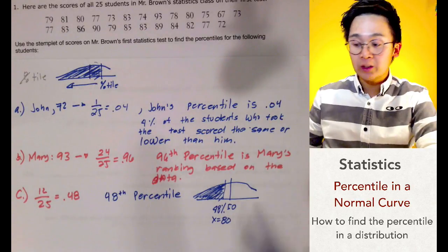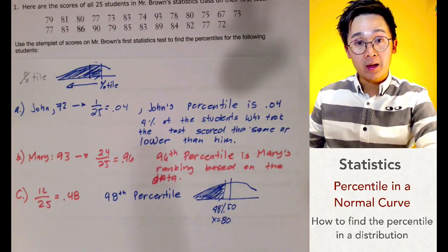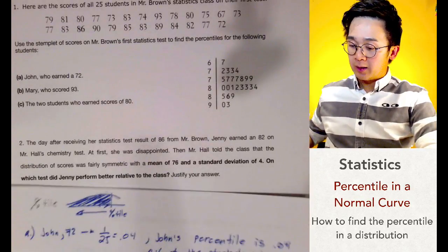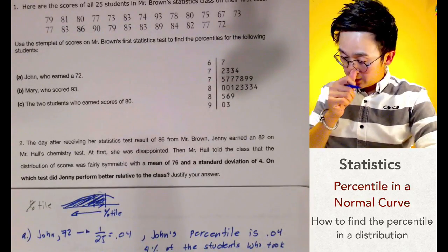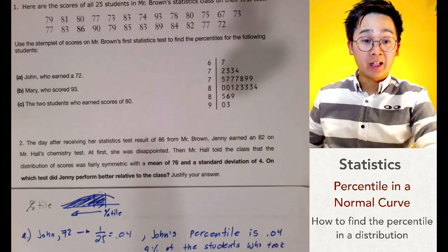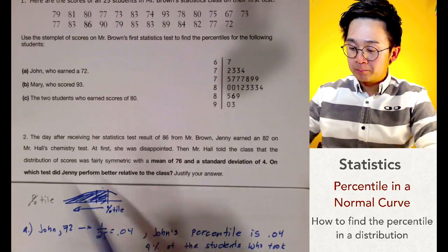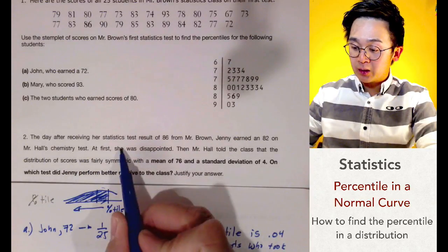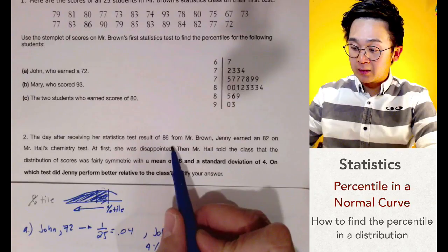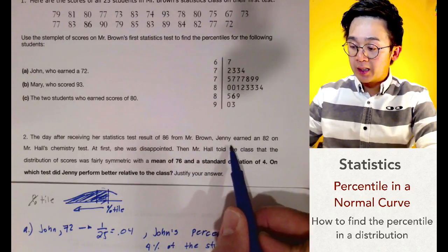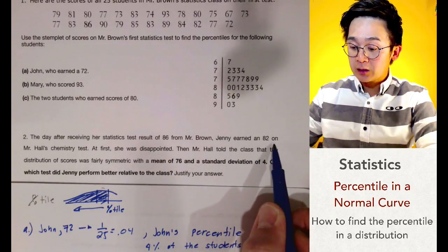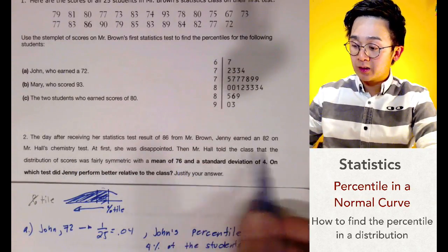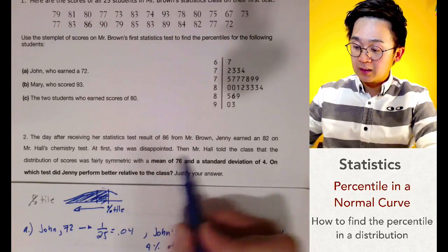That is how you illustrate and interpret the percentile of a given distribution. For number two, this problem is related to problem one. The day after receiving her statistics test result of 86 from Mr. Brown, Jenny earned an 82 on Mr. Hall's chemistry test. At first she was disappointed because 82 is lower than 86.